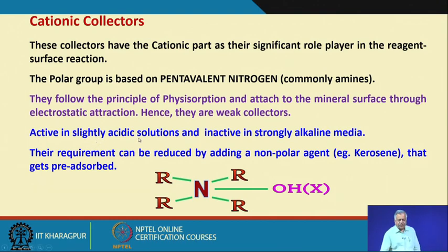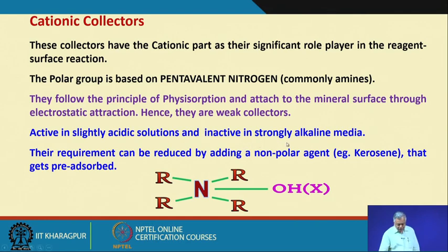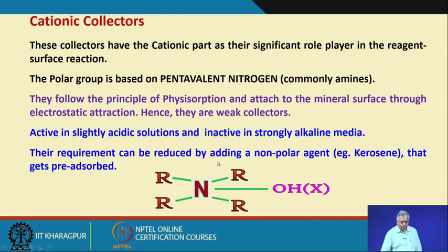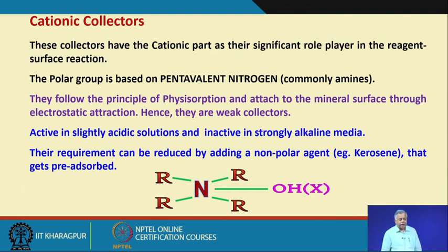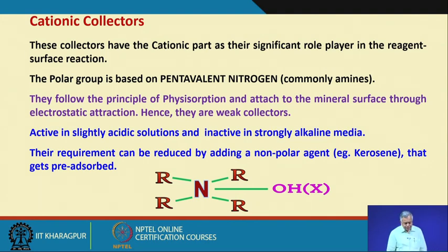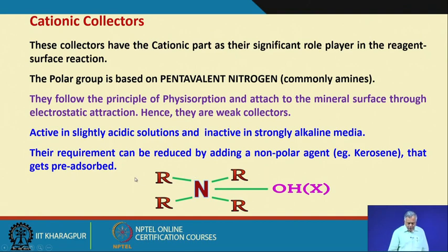Cationic collectors are active in slightly acidic solutions — the pH has to be a little bit acidic — and inactive in strongly alkaline media. Their requirement can be reduced by adding a non-polar agent, that is kerosene, which gets pre-adsorbed. Since cationic collectors are often costly chemicals, the amount required can be reduced by adding kerosene that gets pre-adsorbed onto the surfaces of the minerals.